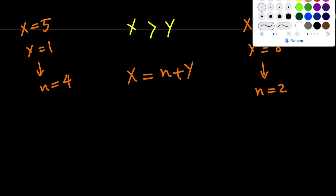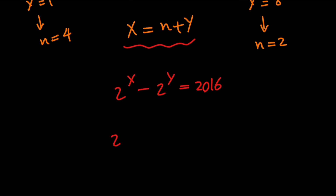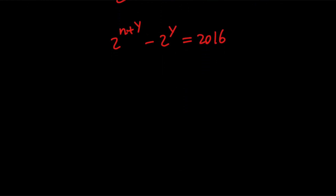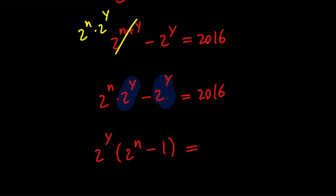Next, let's go ahead and rewrite our original equation. We had 2 to the power of x minus 2 to the power of y equals 2016. Since x equals n plus y, we get 2 to the power of n plus y minus 2 to the power of y equals 2016. Using the rules of exponents, we replace this with 2 to the power of n times 2 to the power of y minus 2 to the power of y equals 2016. Pulling out 2 to the power of y gives us 2 to the power of y times the quantity 2 to the power of n minus 1, equals 2016.